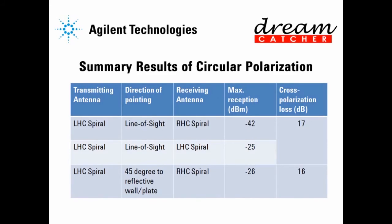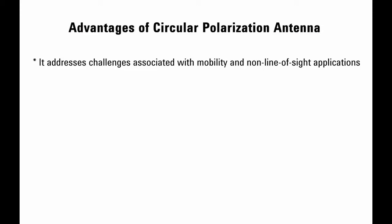From the tabulated data, for line-of-sight circular polarization, antennas must be in the same polarization mode for the highest reception; the cross-polarization loss for this setup is 17 dB. We can also observe that the reflected signal from a conductive plate results in a reversal of polarization. Thus, the right-hand circular spiral antenna can receive a signal from a left-hand circular polarized source, at a level as good as the co-polarization setup at negative 26 dB. This reflection causes no reduction or loss of signal; on the contrary, it enables the two cross-polarized antennas to communicate without loss.